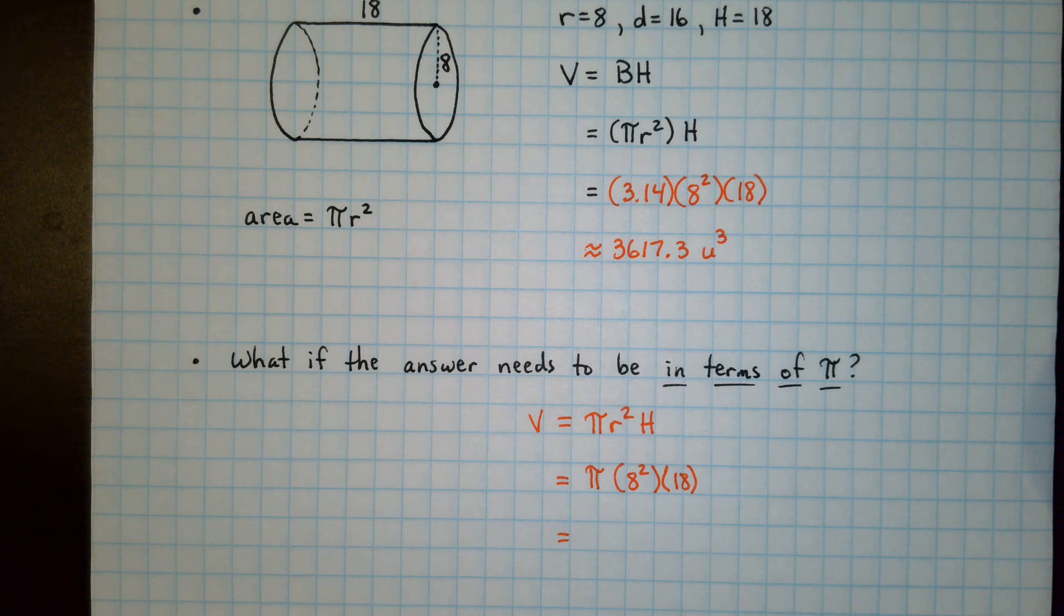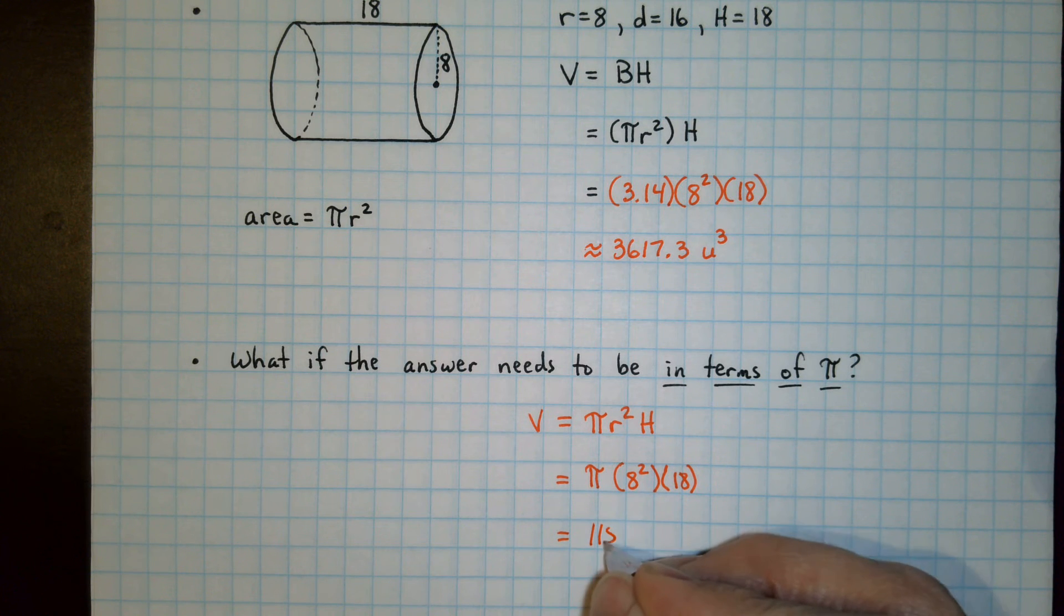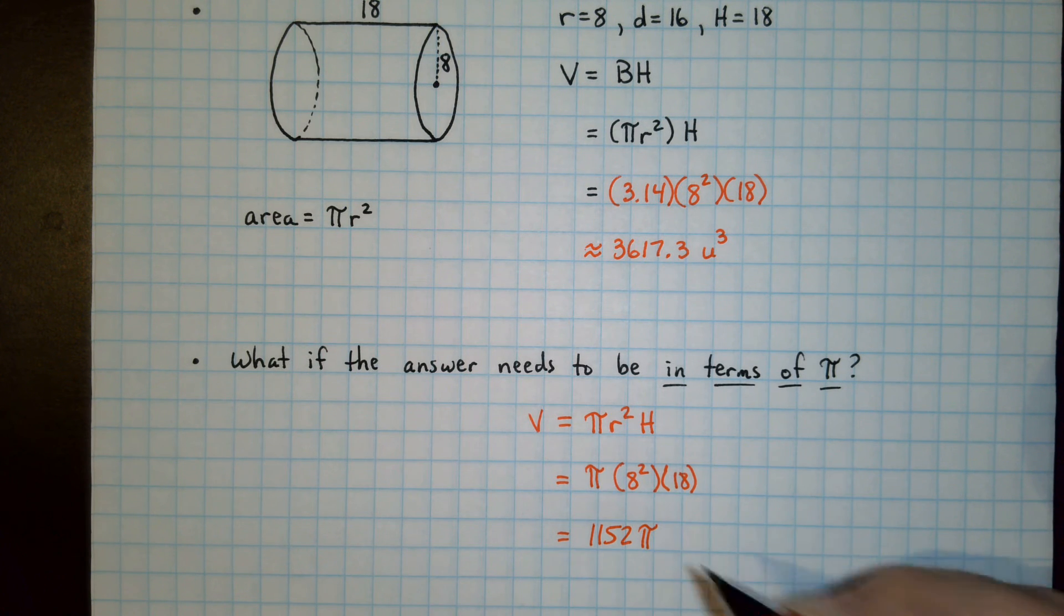But everything else still gets multiplied out. We get 1,152. The pi symbol remains in the answer. We're going to have units cubed.